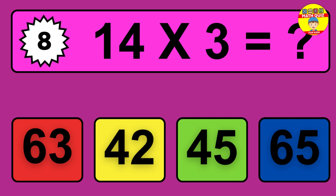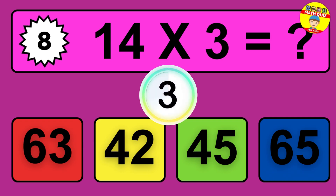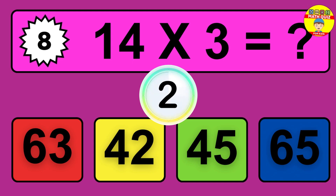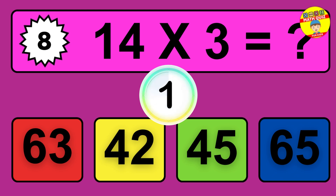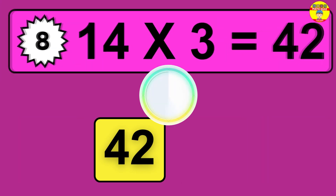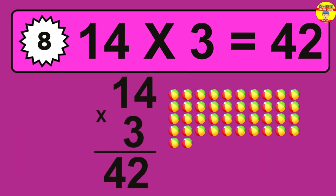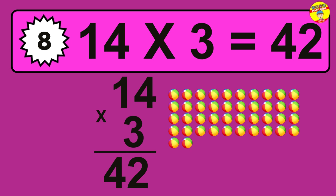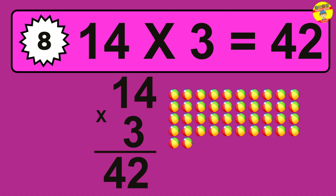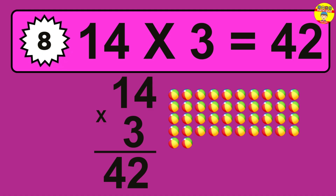Question eight: 14 times 3 equals what? The answer is 14 times 3 is 42. To calculate, we have 14 groups with 3 balls each. So how many balls do we have? 42 balls.